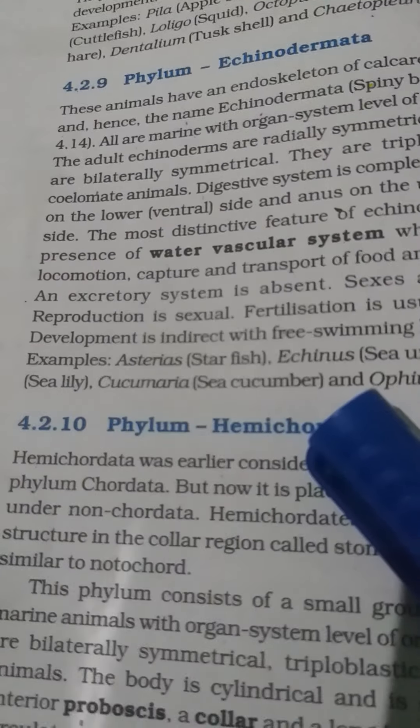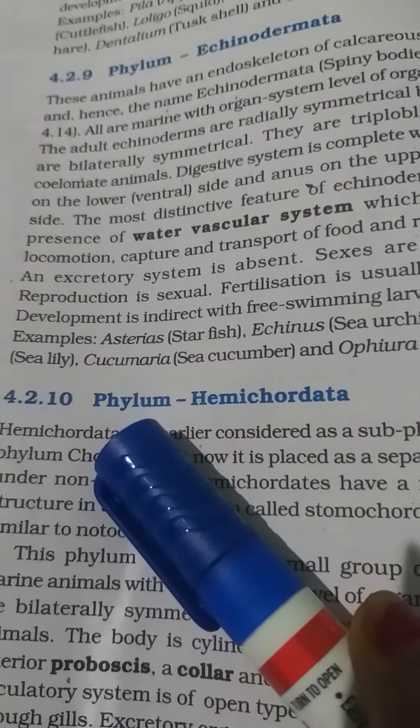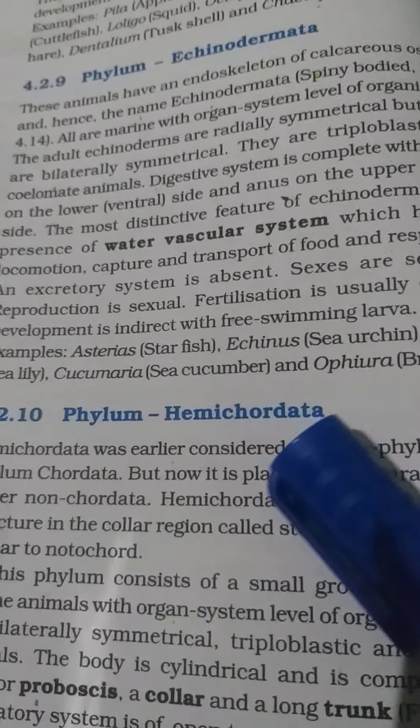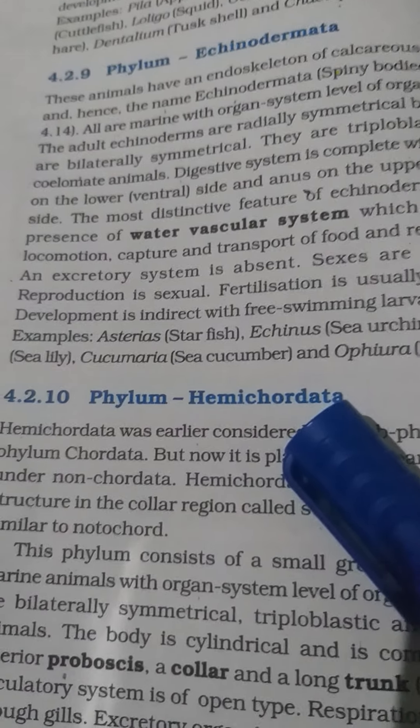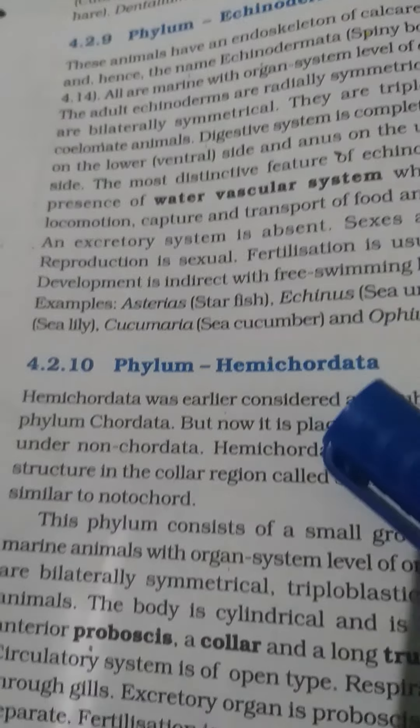Larval stages are present. Examples of echinoderms include starfishes, sand dollar, sea cucumber, and sea urchins.